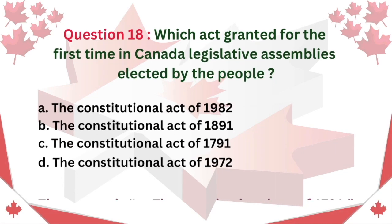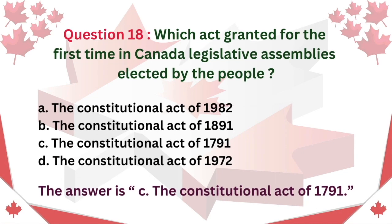Question 18. Which act granted for the first time in Canada legislative assemblies elected by the people? A. The Constitutional Act of 1982 B. The Constitutional Act of 1891 C. The Constitutional Act of 1791 D. The Constitutional Act of 1972. The answer is C. The Constitutional Act of 1791.